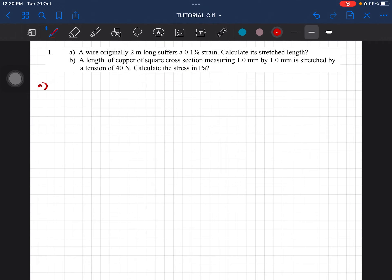For the first question, they gave us the original length L₀ = 2 meters and a strain of 0.1%. We know that strain equals extension over original length, so from here we can get the extension.